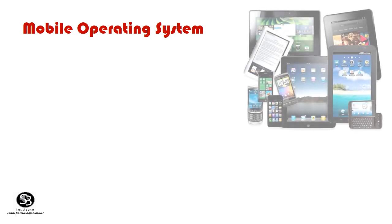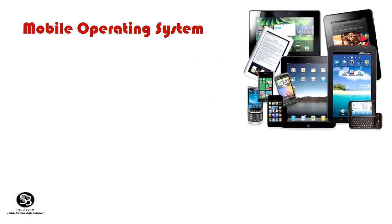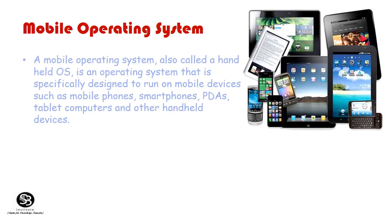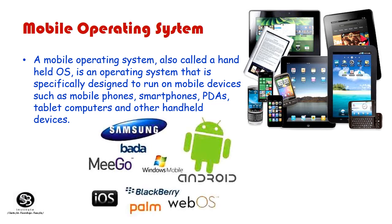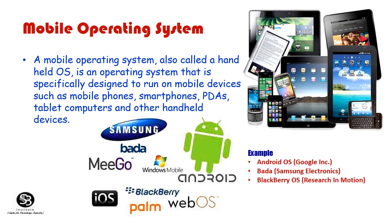Mobile Operating System: A mobile OS, also called a mobile OS, is an operating system specifically designed to run on mobile devices such as mobile phones, smartphones, tablets, and other handheld devices. Examples include Android OS, Bada by Samsung Electronics, BlackBerry OS by Research in Motion, iPhone OS by Apple, Windows Mobile, and Windows Phone.